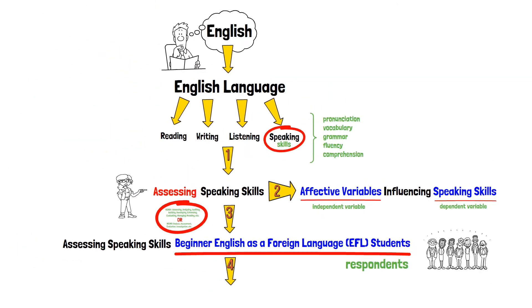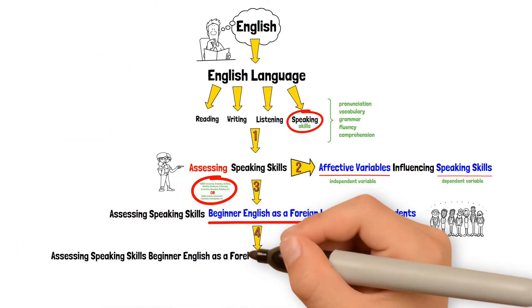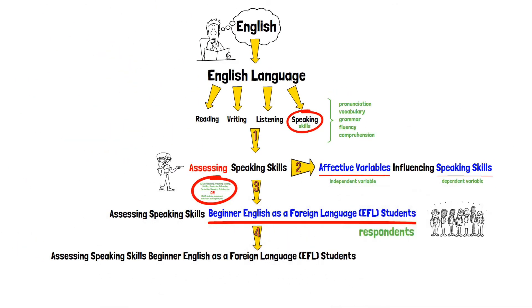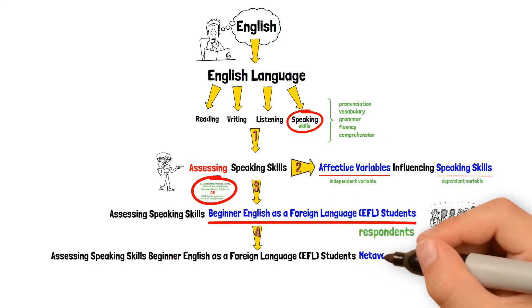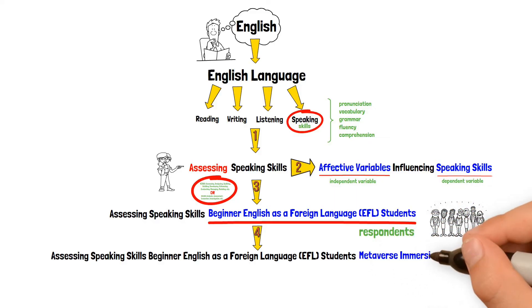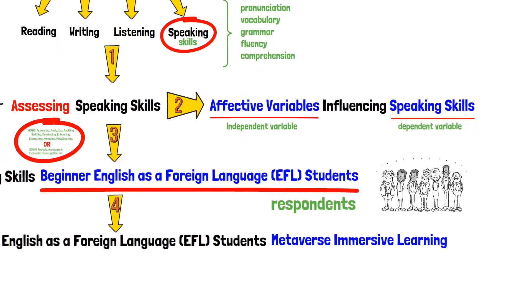4. Write the setting. This is the location of the research. Like the subject, you can discuss the setting scope and limitations in the research methodology.